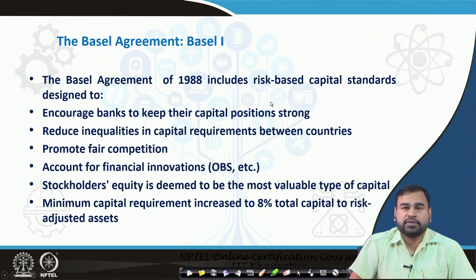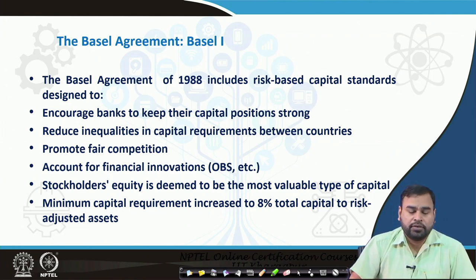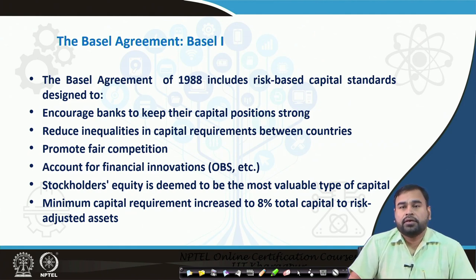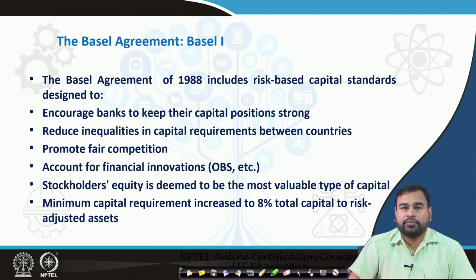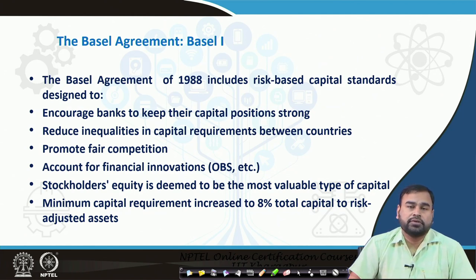The BIS thought of having certain uniform guidelines for maintaining capital, and this started in 1988. The basic objective of Basel 1 was to encourage banks to keep their capital positioning strong, so they can absorb losses or shocks at any point in time, and also to reduce inequalities in capital requirements between different countries so that a kind of uniform policy can be adopted.